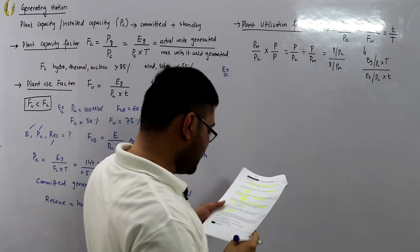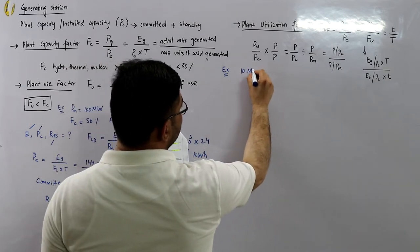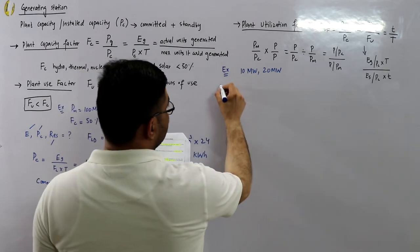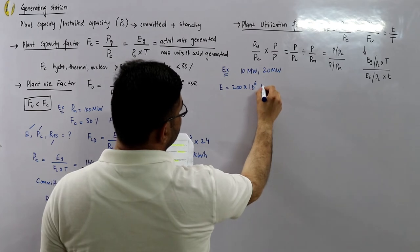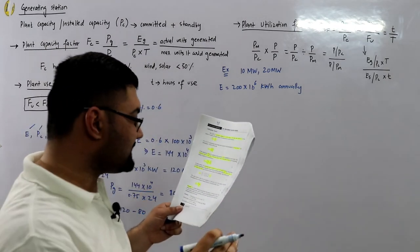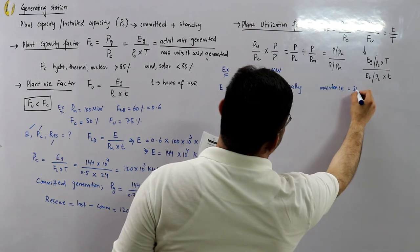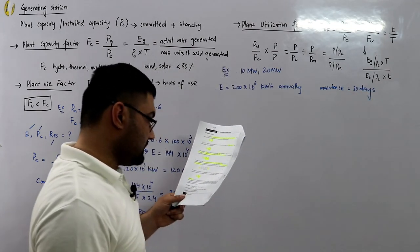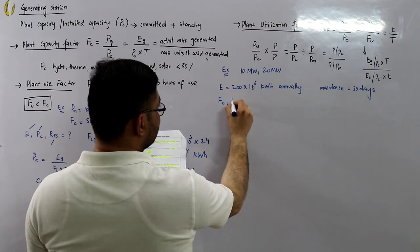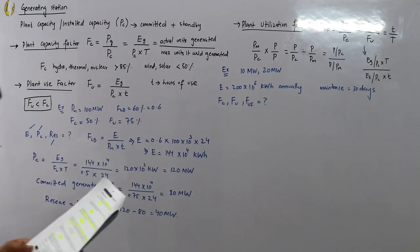Let's do another example. A power station has two generating units with capacities of 10 megawatts and 20 megawatts. The energy generated in a year is 200 × 10⁶ kilowatt-hours. The scheduled maintenance period is 30 days per year with no generation during that time. Calculate the plant capacity factor FC, the plant use factor FU, and the utilization factor FUF.